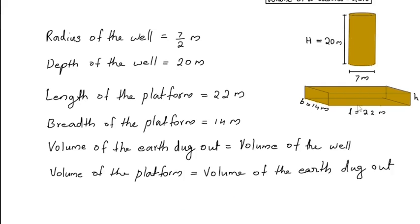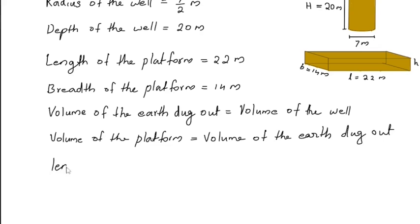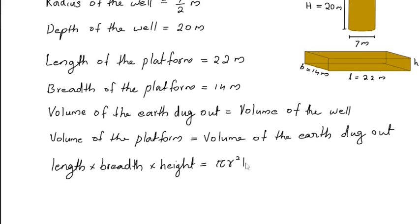The volume of the platform is its length into breadth into height. The volume of the earth dug out is equal to the volume of the well. The well is in the shape of a cylinder, so its volume is pi r squared h.